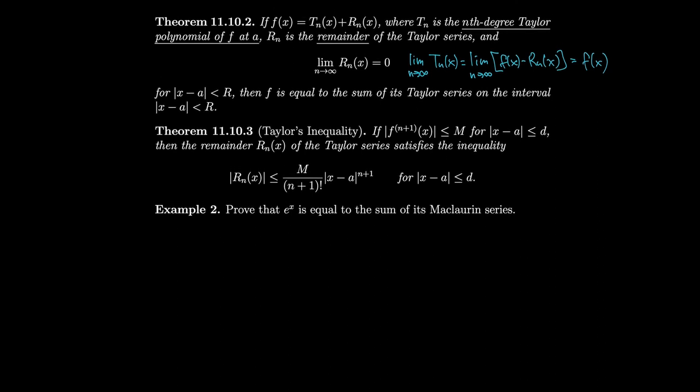Next we have Taylor's inequality, which tells us how large our error could be when approximating using a Taylor polynomial. This gives us a bound on the remainder term R_n, so we can take its limit as n goes to infinity. If the limit is 0, that guarantees the function actually equals its Taylor series, and by our previous theorem we know what that series looks like.